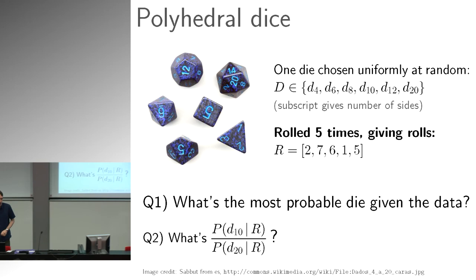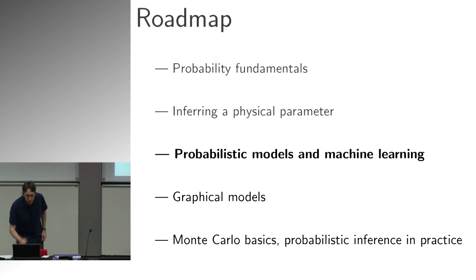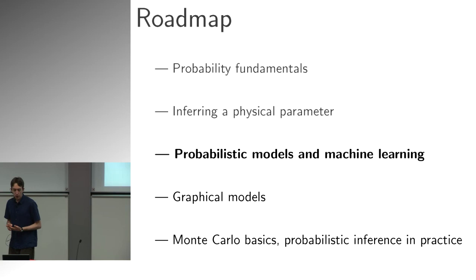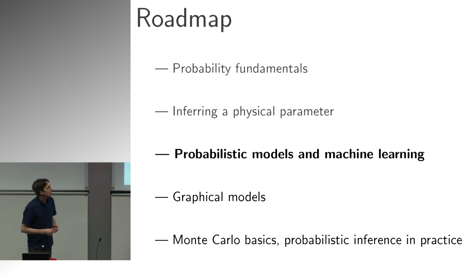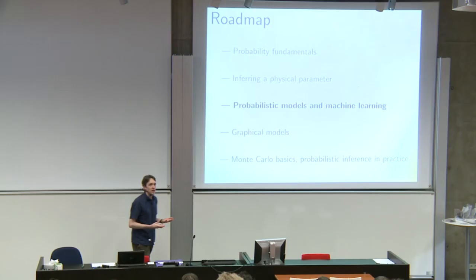Last time I gave you a couple of examples of probabilistic modeling — a trivial one involving some cards, and one involving a physical inference problem. There are a couple of messages I wanted you to take home: write down a probabilistic description of the forward process of your model, and then probability theory tells you what to do.